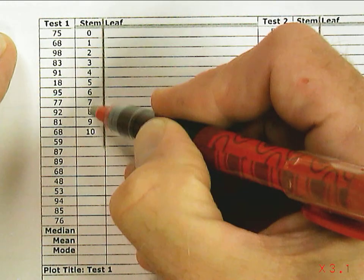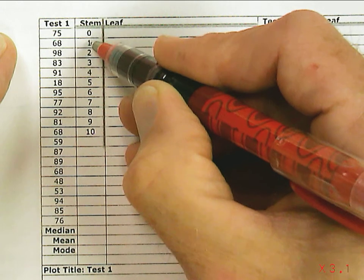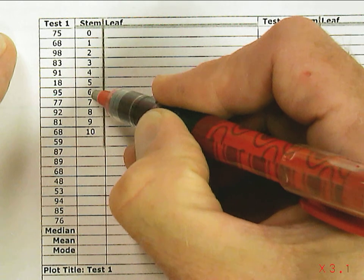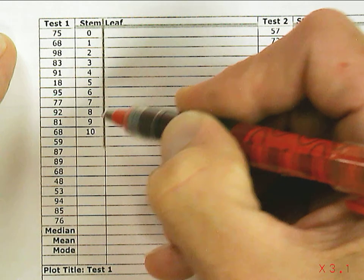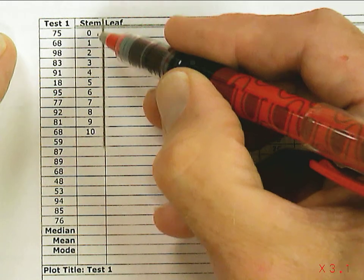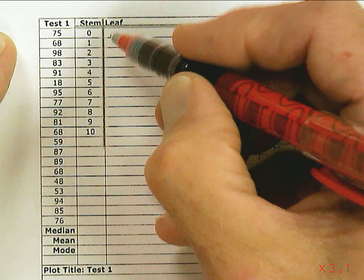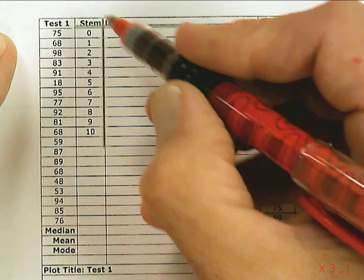The stems are the tens digit, so that's 0, 10, 20, 30, 40, 50, 60, 70, 80, 90, 100. We'll take those and then use them to sort this list.